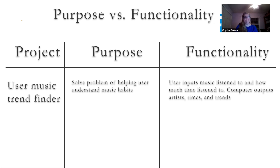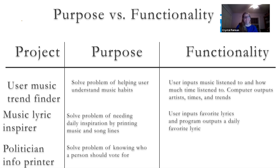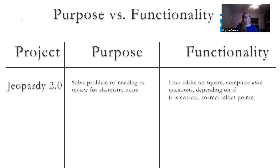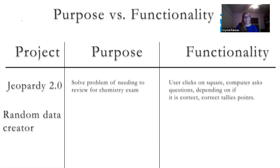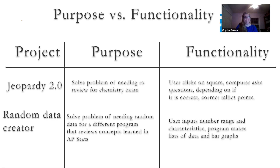The next project was a lyric inspirer: the purpose is that it solves the problem of needing daily inspiration by printing music and song lines, and how it works is you give it some lyrics and it randomly prints out lyrics daily. The next was a politician info printer: the purpose is solving the problem of knowing who a person should vote for, and the functionality is you input information, it searches and prints out who you should vote for. The next was a Jeopardy-like game: the purpose was to solve the problem of needing to review for a chemistry exam — edutainment again — and the functionality is you click on a square, it asks questions, and you get points for correct answers. The last example was a random data generator: it solves the problem of needing random data for a program that reviews AP Stats concepts — a purely educational purpose — and the functionality is you input a range and characteristics, and the program outputs random data in a list.